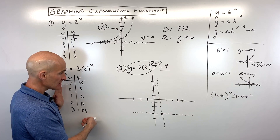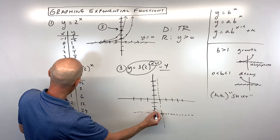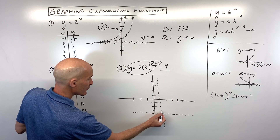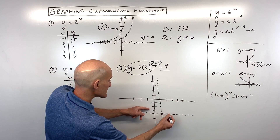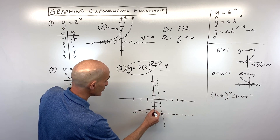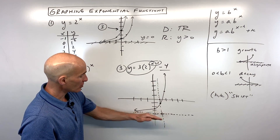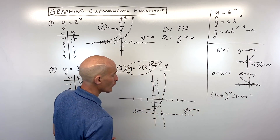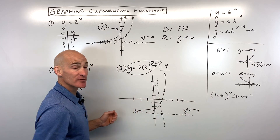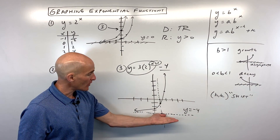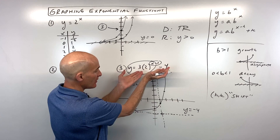We graph from this new origin using the same table points. Going left one up three-halves, then zero-three, then right one up six — you can see it rising faster and faster, going off the graph. Because the graph was shifted down four, the horizontal asymptote is y equals negative four. Domain is all real numbers. Range: y is greater than, but not equal to, negative four, since the graph is above that asymptote.